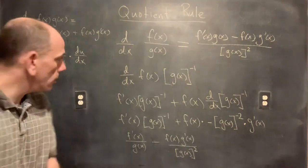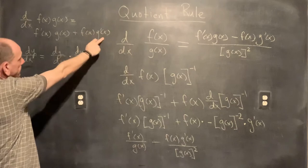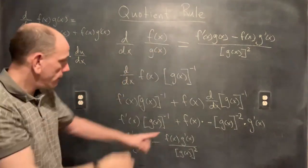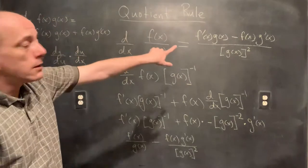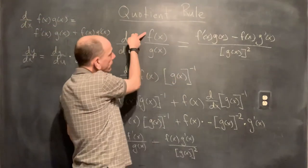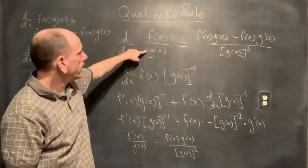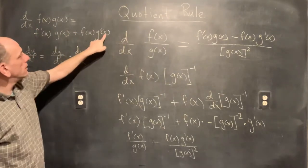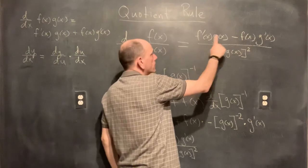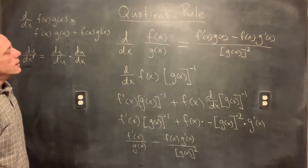When we learned the product rule, order didn't matter because it's a sum. In the quotient rule, we have a difference, and subtraction is not commutative, so order matters. Think of the numerator as first and denominator as second: the derivative of the first comes first, the derivative of the second comes second. So it's the derivative of the first times the second, minus the first times the derivative of the second, over the second squared.